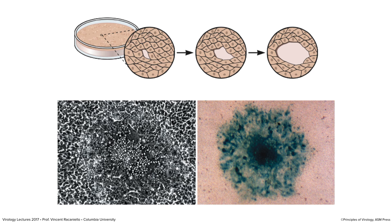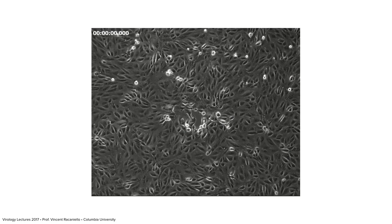Here one cell was infected with a virus particle, it lyses and releases viruses, they infect neighboring cells and kill them. So this hole in the monolayer gets bigger and bigger until you can see it, then you stain the cells and see plaques. The function of the agar overlay is to make sure viruses are restricted to the area of the initially infected cell. If you had liquid on top, all cells would be killed because the virus would diffuse everywhere and you couldn't count anything. You can see the plaque growing: cells detach and die, become refractory to light, get shiny — that's a consequence of dying.